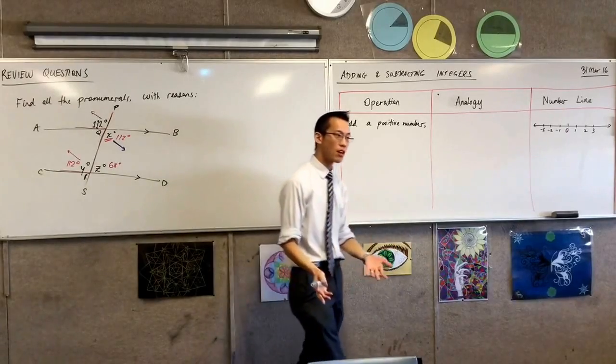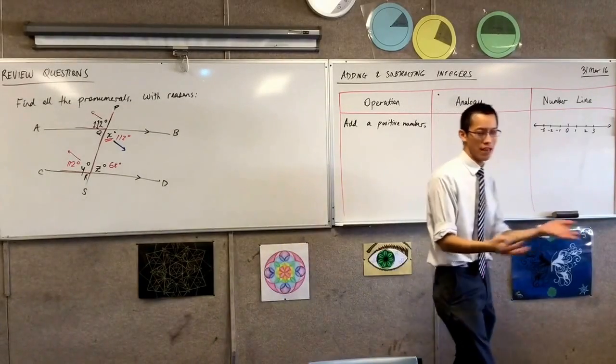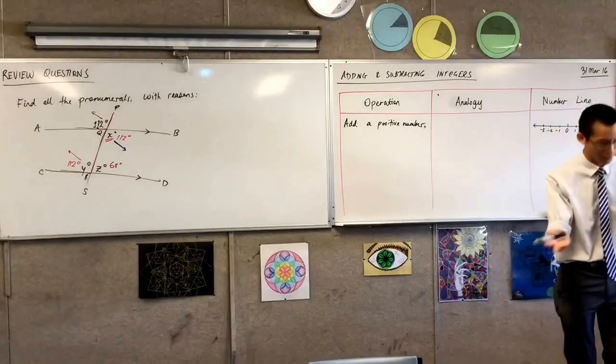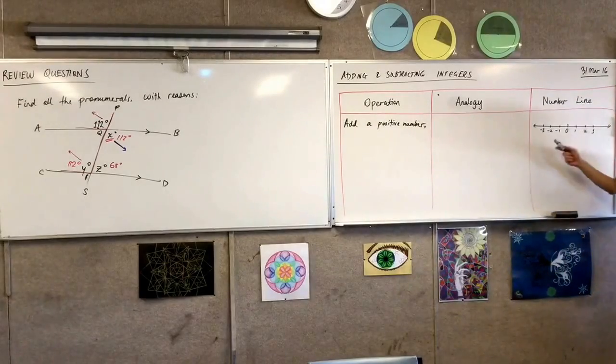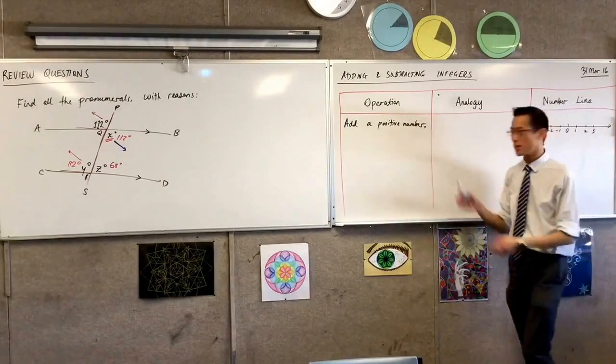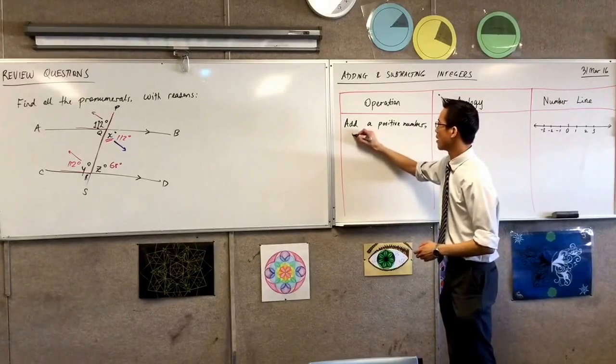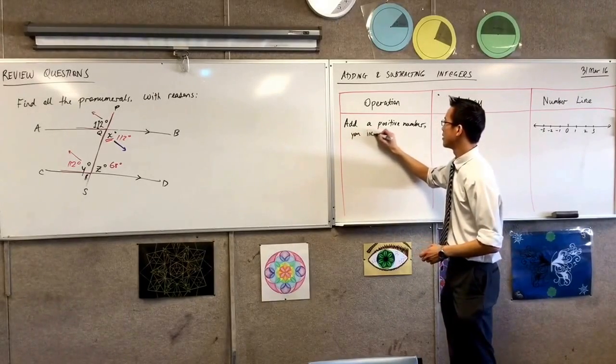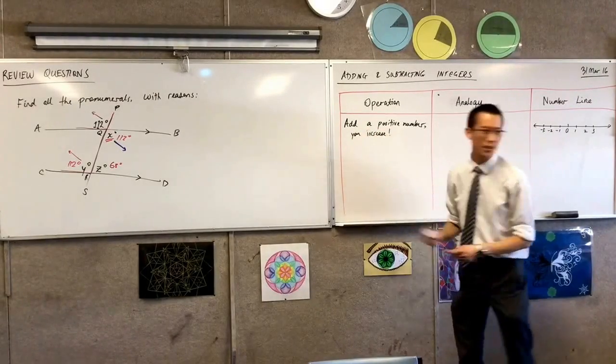Adding a positive number. What's the result? The result is going to be, well, the answer is three, which is bigger. I've increased in size, in other words. So if you add a positive number, you increase.